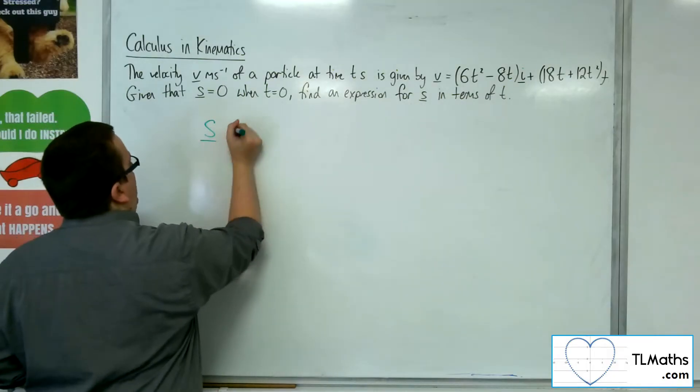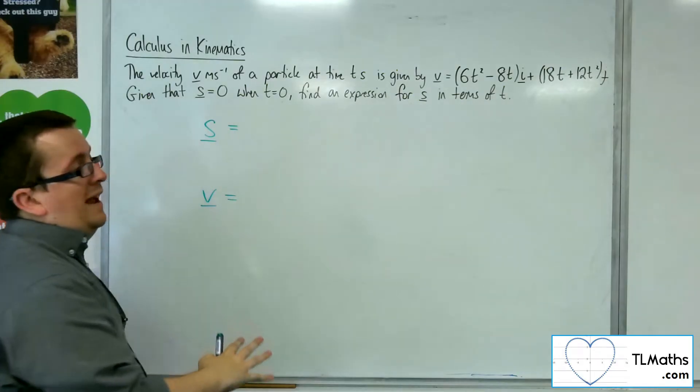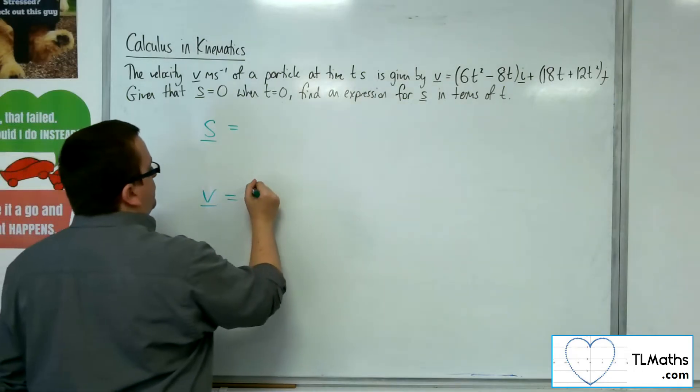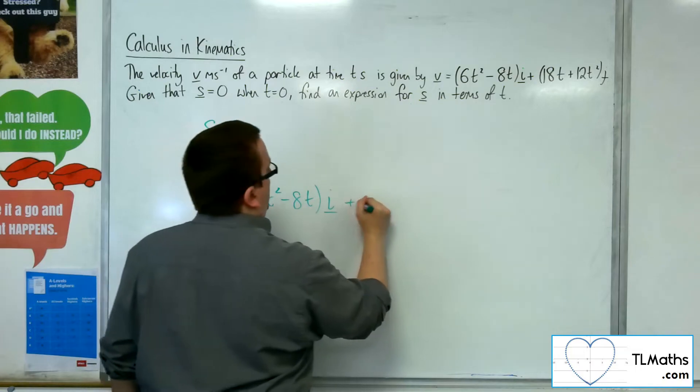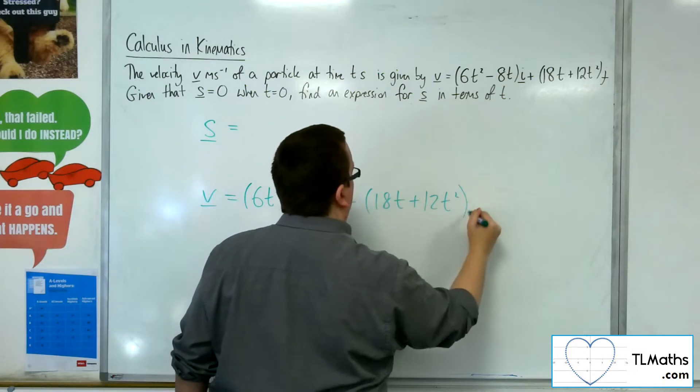So we've got s and we've got v. I'm not going to bother looking at a because that's not part of the question. Now, v is 6t squared minus 8ti plus 18t plus 12t squared j.